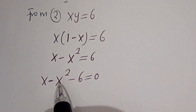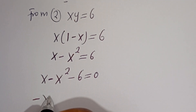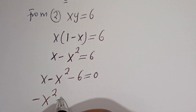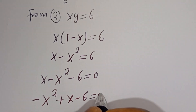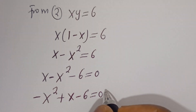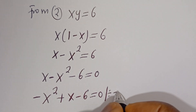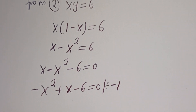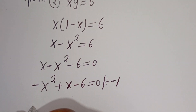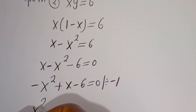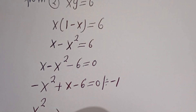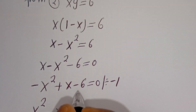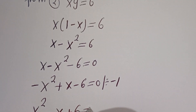Let's put this in standard form: minus x squared plus x minus 6 is equal to 0. Now let's divide all through by minus 1. Then we get x squared minus x plus 6 is equal to 0.